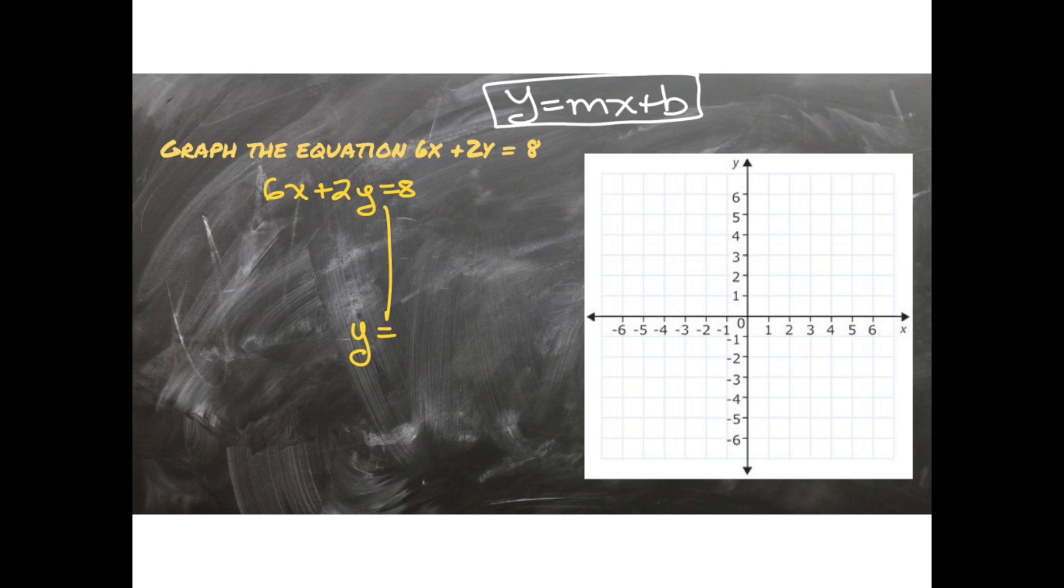Okay so the first step that we're going to do in order to leave the y alone is to cancel the 6x. How? With negative 6x. What I do to one side I do to the other. So the x's are going to cancel on this side. I'm going to have 2y equals, and I'm going to put my x's first. Remember this is a number that's an x. They cannot combine. They're not like terms. So I'm going to say negative 6x plus 8.